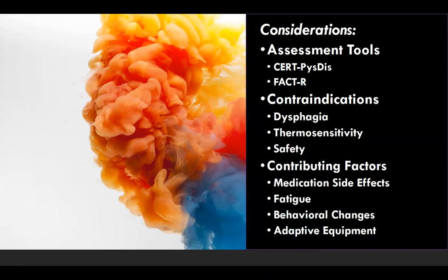Taking in the disorders discussed in this presentation on neurological impairments, there are several things to consider when thinking about assessment, planning, implementation, and evaluation — the APIE process. The Comprehensive Evaluation of Recreational Therapy, Physical Disabilities, known as the CERT-Sci-Diz, and the Functional Assessment of Characteristics for Therapeutic Recreation Revised, known as FACTR, are helpful in measuring functional abilities.